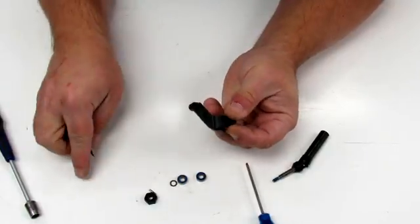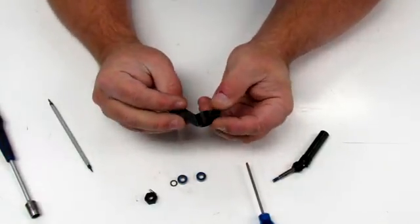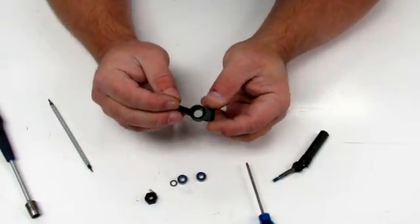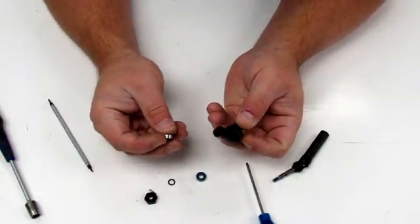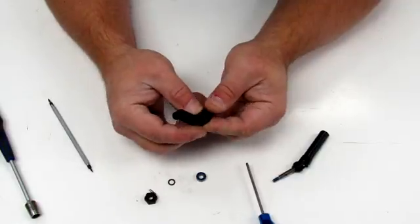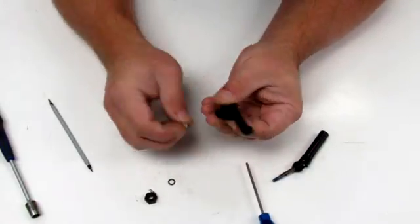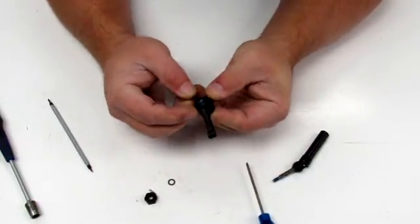Now we take our new part for the Traxxas Slash two-wheel drive. This is part number 3752, I believe. Reverse assembly. Slide that in. Slide that in.